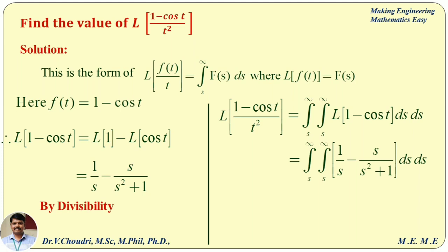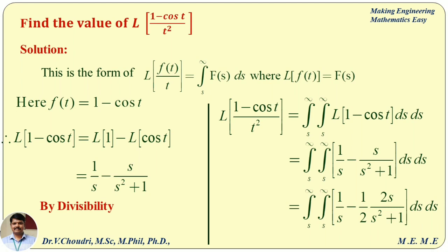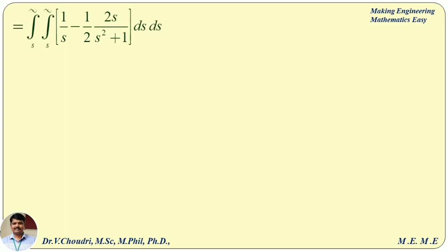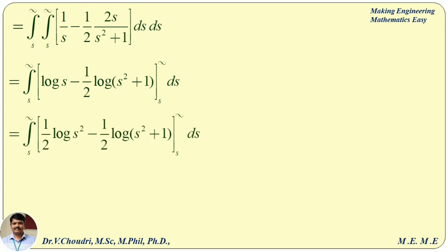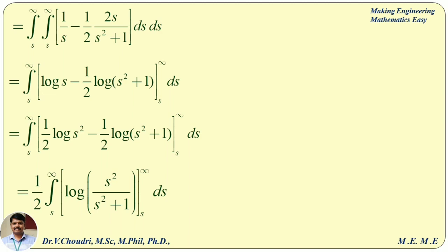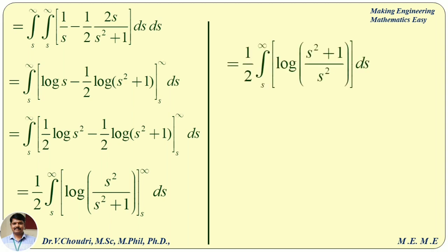Substituting the value of L of (1 − cos t), and rewriting the second term as (1/2)·2s/(s² + 1) for substitution. Applying the inner integral: 1/s integrates to log s, and 2s/(s²+1) integrates to log(s²+1) by substitution. Making the first term (1/2)·log(s²) so that 1/2 is common to both terms. Taking 1/2 outside: (1/2) integral from s to infinity of log(s²/(s²+1)) ds. Since the upper limit is infinity and lower limit is s, we write the reciprocal: (1/2) integral from s to infinity of log((s²+1)/s²) ds.